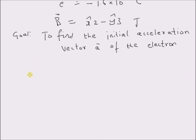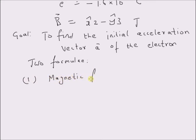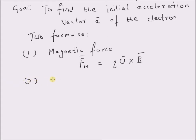To solve this problem, we basically need the following two formulae. The first one is the magnetic force, which is F-m-bar is equal to q times u-bar cross b-bar, where u-bar cross b-bar is the cross product between the velocity and the magnetic field vector or flux density vector. This formula is for a charge q moving with a velocity u-bar in a magnetic field b-bar. The second one we need is Newton's second law, which relates force to the acceleration vector.